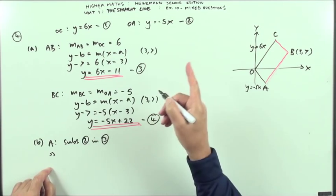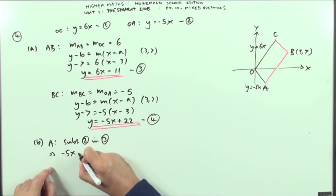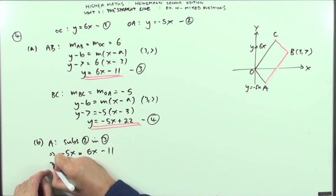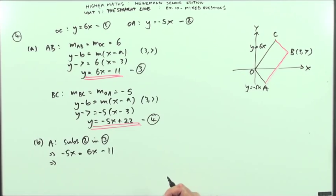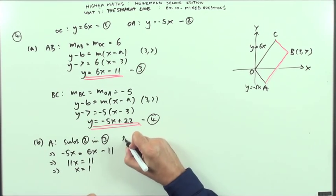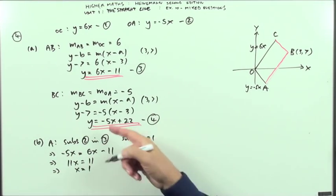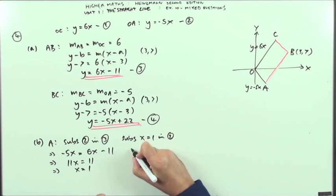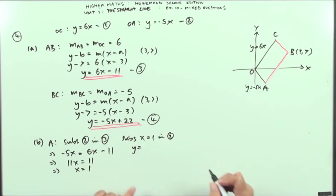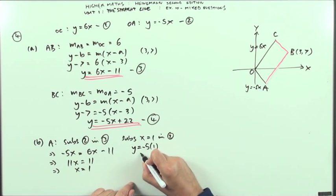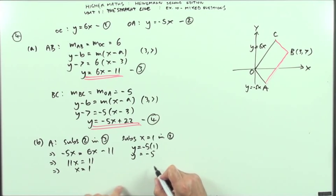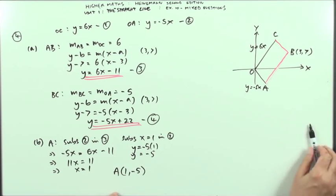I've got negative 5X is going to equal 6X minus 11. I've got 11X equals 11 which means X equals 1. Then substitute X equals 1 into equation 2 which means you've got Y equals negative 5 times 1 so Y equals negative 5, which means A is going to be the point (1, -5).